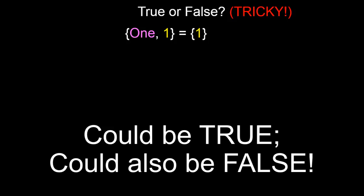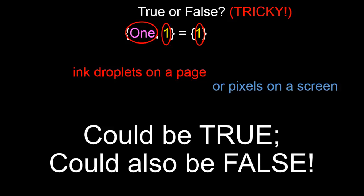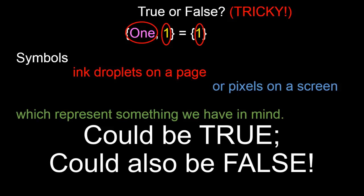When we write down elements of a set such as one and one, all we are doing is to print out ink droplets on a page or display pixels on your screen. What these ink droplets or pixels correspond to are symbols, and these are symbols which represent something that we have in our mind.